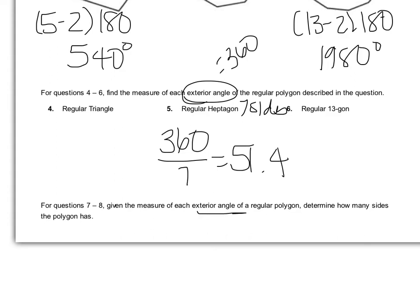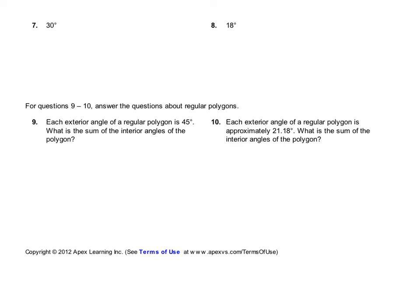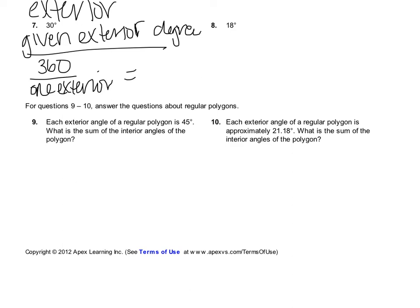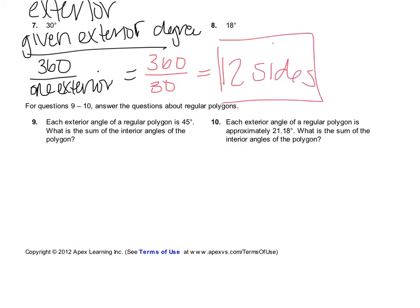Numbers 7 and 8 give the measure of each exterior angle and ask how many sides the polygon has. You may want to write this down because it's going to be on your quiz: if you're given the exterior angle degree, all you have to do is divide 360 by that one exterior angle. For number 7, the exterior is 30 degrees, so 360 divided by 30 gives 12 sides.